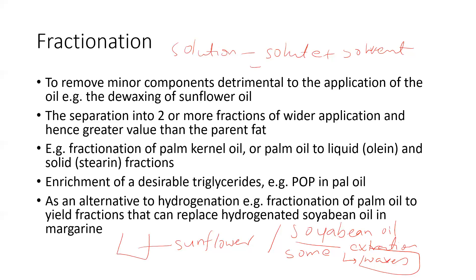Fractionation also helps in the separation of fractions from liquid oils — two or more fractions of wider applications. When you separate fractions like saturated or unsaturated fractions, you have wider applications and greater value than the original liquid oil or parent fat. For example, fractionation of palm kernel oil: palm oil has about 50% saturated and 50% unsaturated fatty acids. Palm oil can be separated into a liquid fraction — olein — and a solid fraction — stearine. These fractions could be separated and each has different applications.